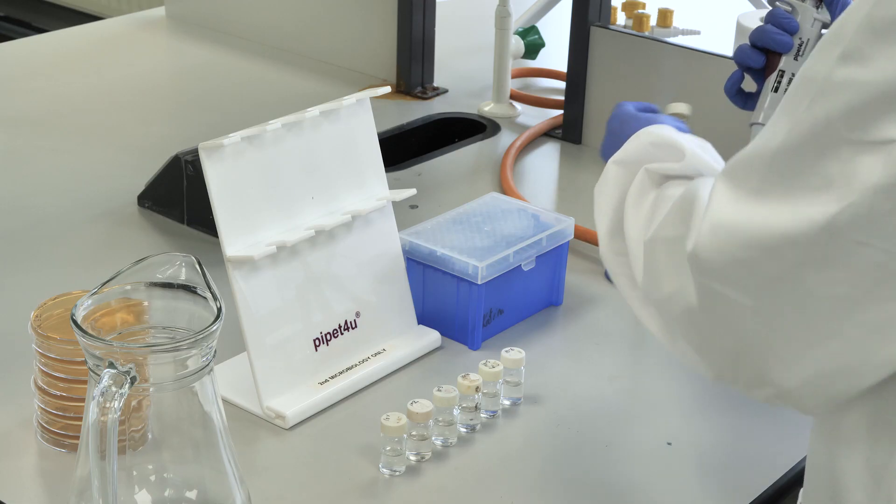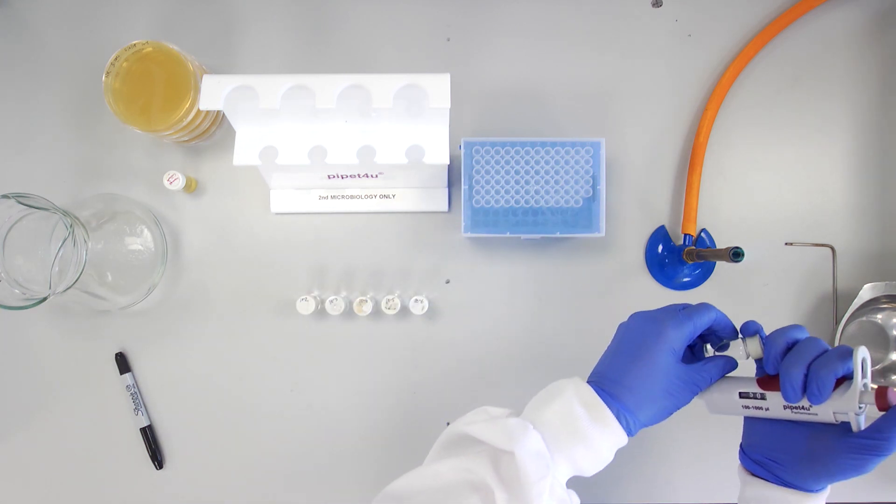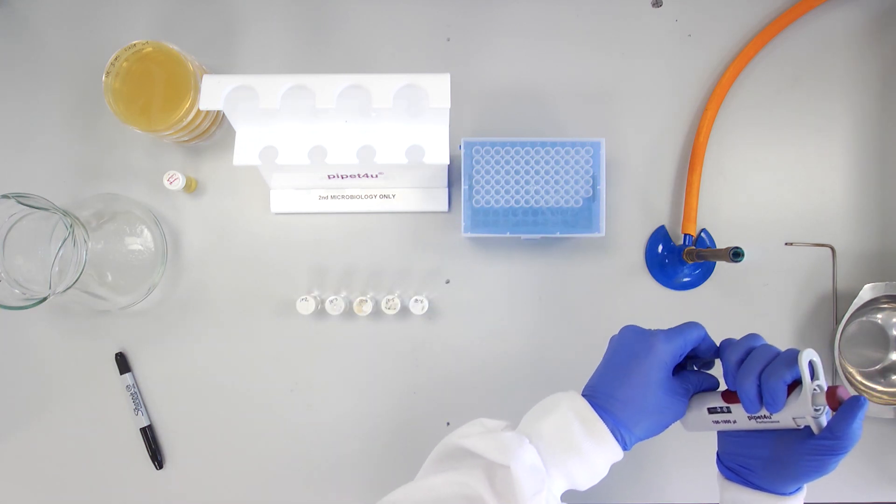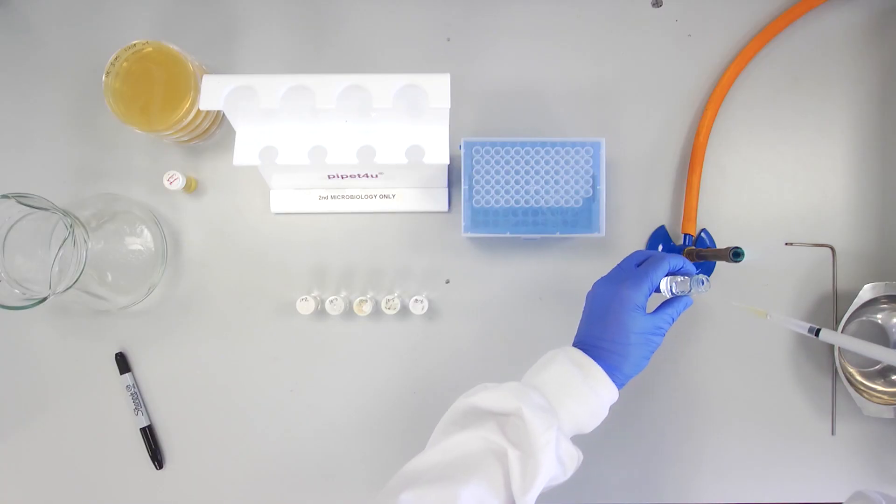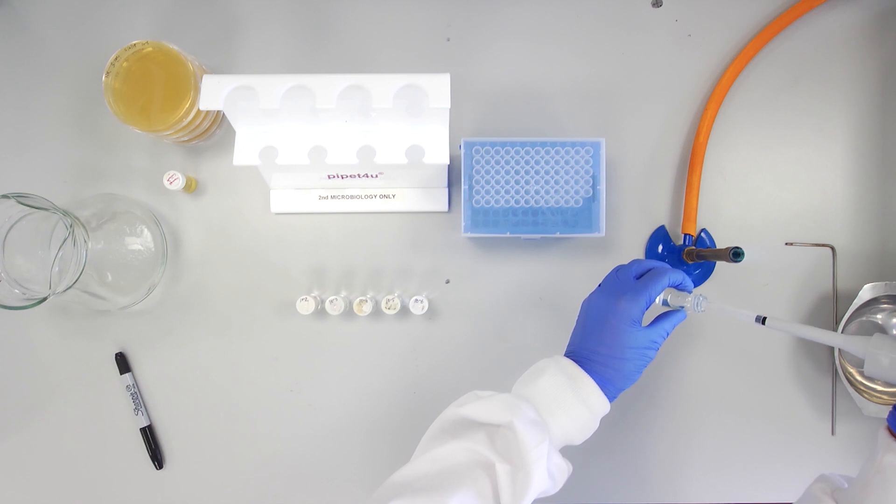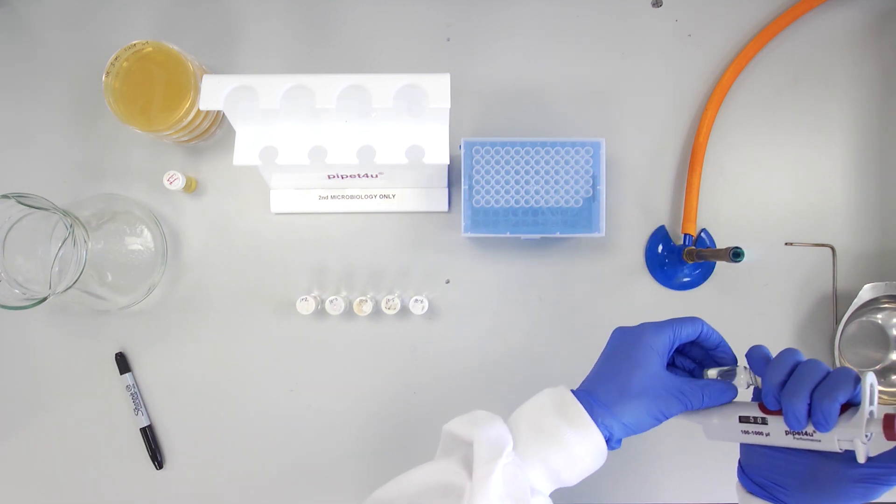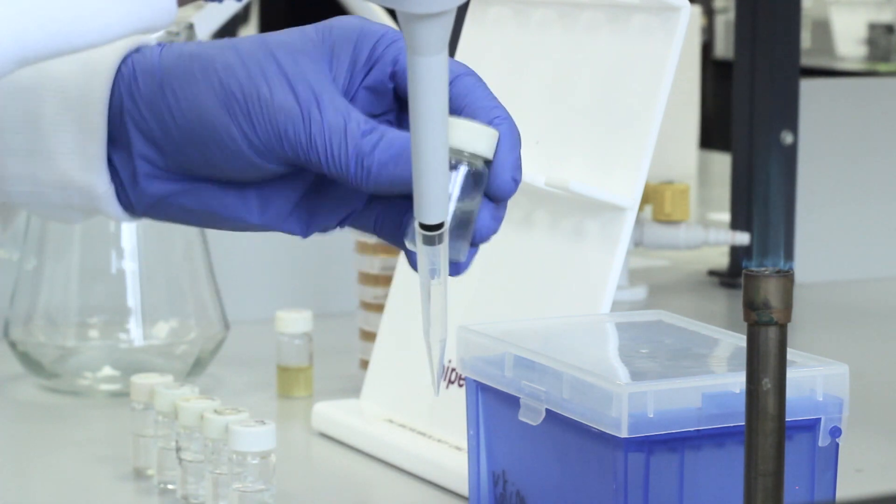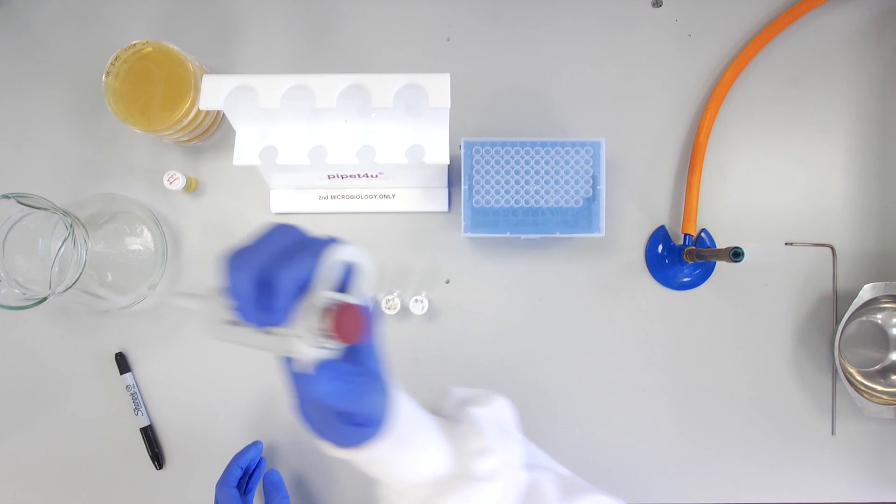Transfer this 500 µl of the overnight culture into the first of six 4.5 ml saline bijoux, again using aseptic technique. Mix the culture suspension well by inverting three times. This is the 10 to the minus 1 dilution.